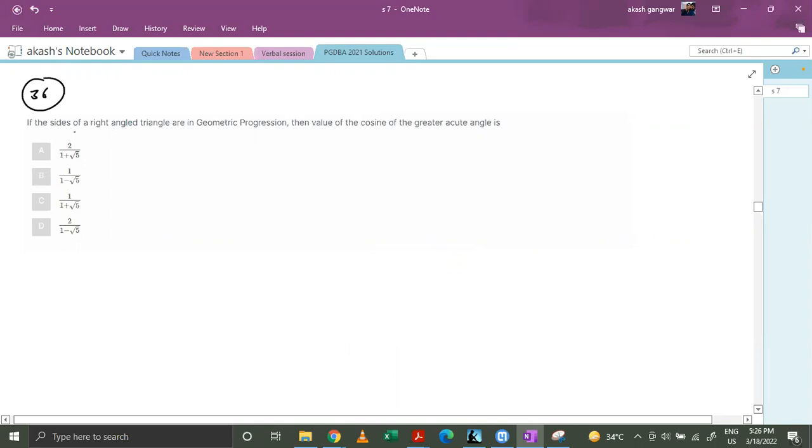Let's discuss question number 36. If the sides of a right angle triangle are in geometric progression, then the value of cosine of the greater acute angle is.